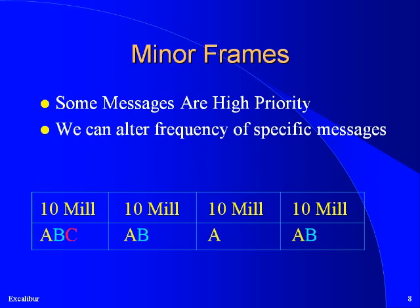Now let's say we have a critical message — for example, incoming missile alert — a less critical message, perhaps current latitude, and a low priority message, say landing gear safely stored. We would prefer to call the most critical message more frequently than the least critical message. This slide demonstrates how we can divide a 40 millisecond major frame into four 10 millisecond minor frames so that the critical message A occurs four times as often as the non-critical message C. Medium priority message B occurs three times within the major frame.